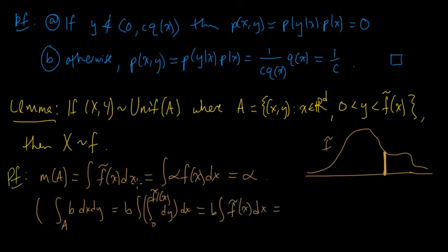So this becomes B, F tilde of X dx, and that's exactly what we have here. So we end up with alpha, and so then that implies that the density is equal to, oh sorry, this should be B alpha, and this was equal to 1, because we were integrating the density over the whole thing. And that implies, so we solve for B, and B is 1 over alpha.